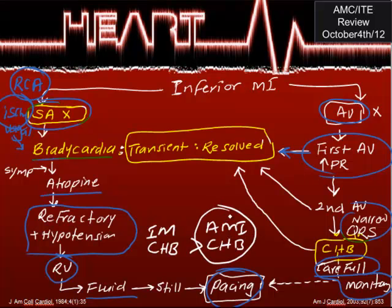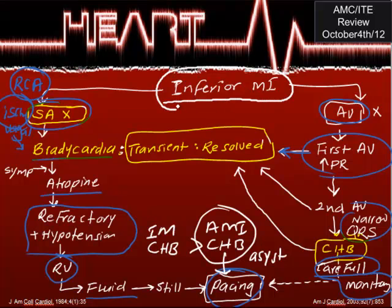Standard indications for temporary pacing include: asystole, left bundle branch block, right bundle branch block, and alternating bifascicular blocks. But for inferior MI board questions, if the patient has bradycardia — whether first, second, or third degree block — the answer is usually that it's transient and will resolve spontaneously.